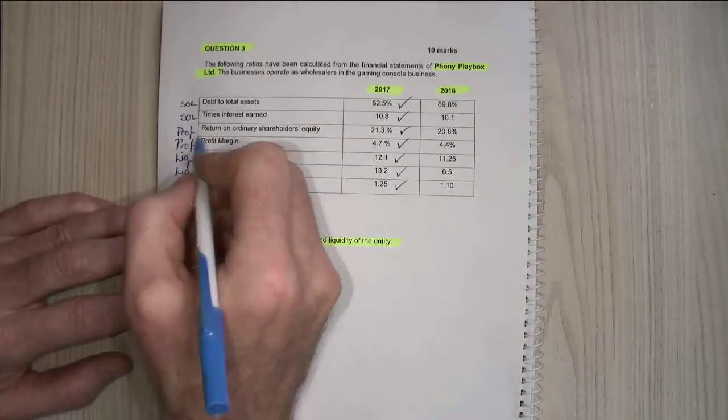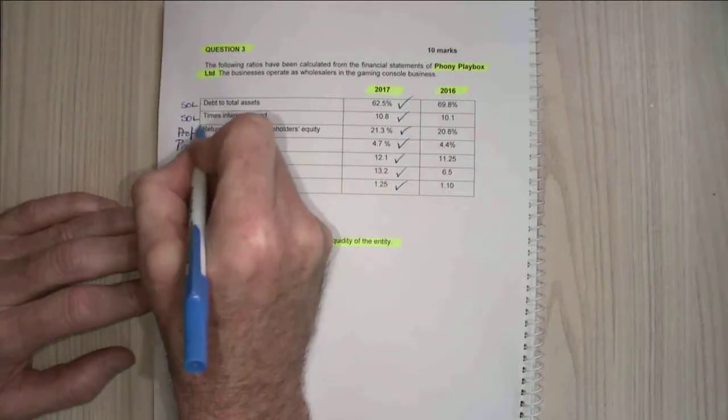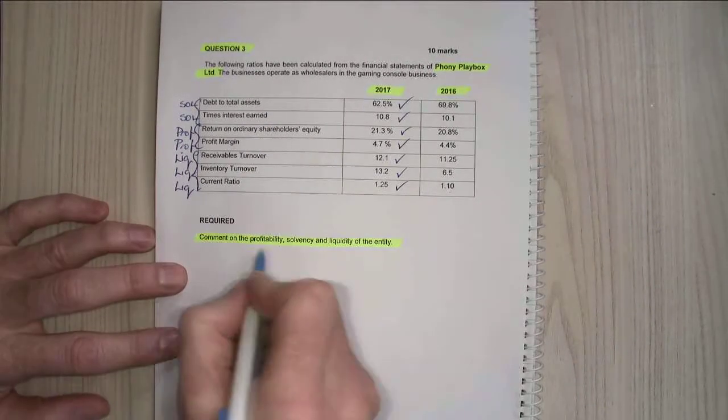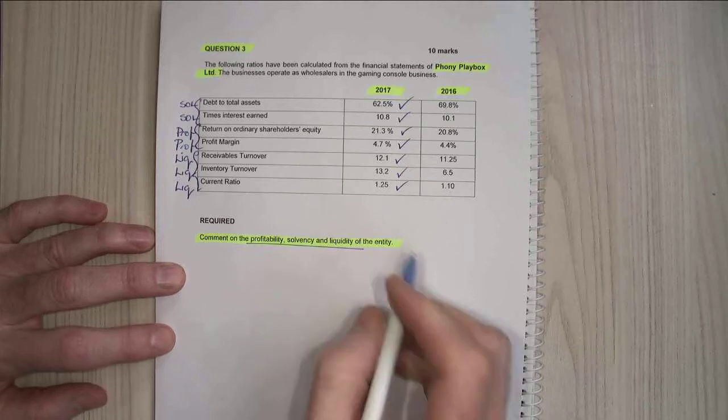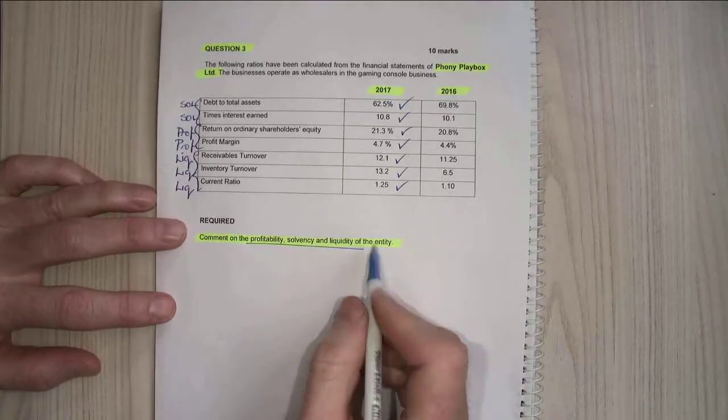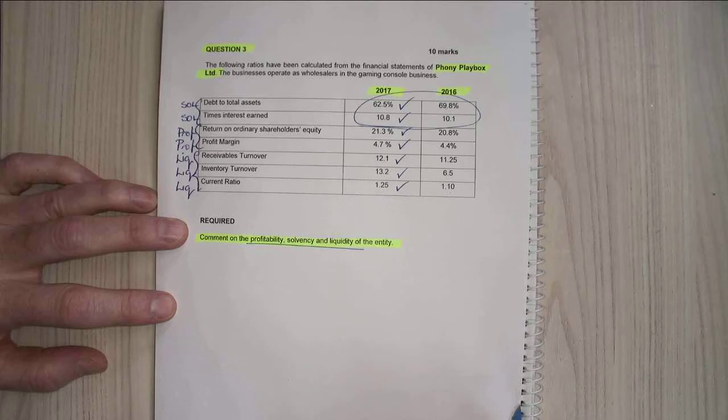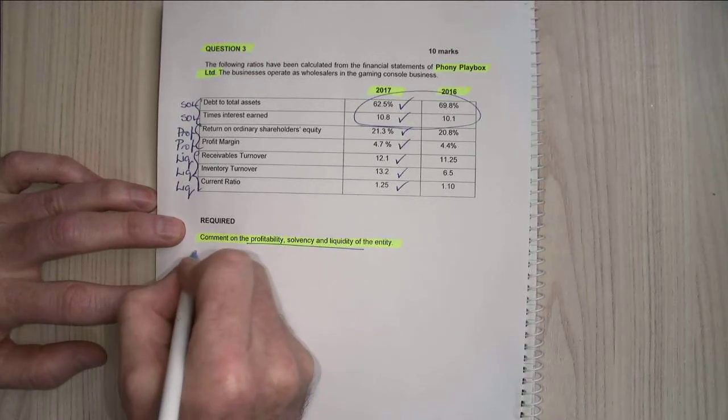So we can look at it that in all areas we've had improvement. So it tells me to comment on the profitability, solvency and liquidity of the business. So I'm going to talk about these ratios first which is solvency.